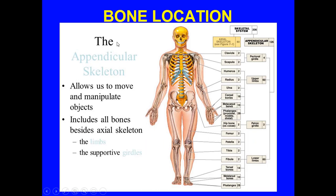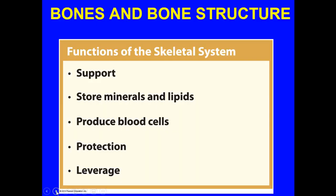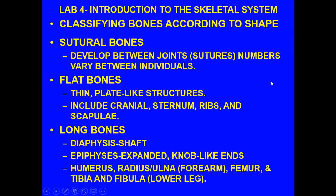The appendicular skeleton relates to the limbs, allowing us to move and manipulate objects. It includes all the bones beside the axial skeleton — the limbs and the supportive girdles. The functions of the skeletal system include support, storage of minerals and lipids, the production of red blood cells and all sorts of blood cells including white blood cells and platelets, protection of organs, and leverage.